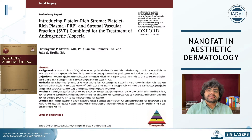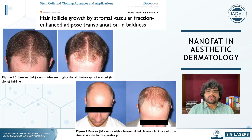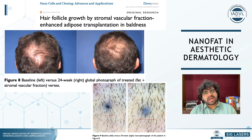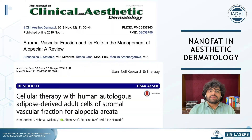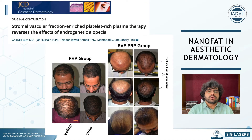The next indication to discuss is hair loss. Many papers show stromal vascular fraction results across different types of alopecia, and various papers demonstrate how results can be expected. This is definitely an area we can explore further, and the concept is very similar to the dermal niche theory.